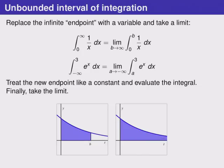In the first example we have an infinity in the upper level, so we'll replace that with a b instead, which we think of as some variable, just a finite number, and then we'll let b go to infinity. In the second example we have a negative infinity, so that turns into an a and we take the limit as that a goes to negative infinity.